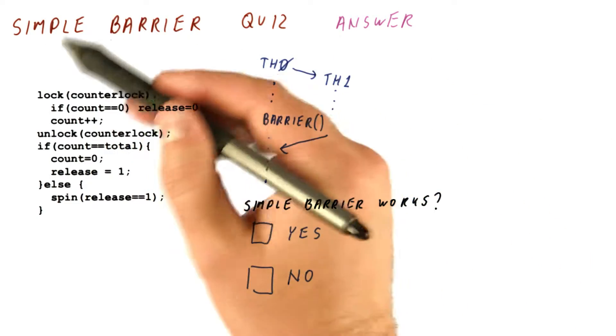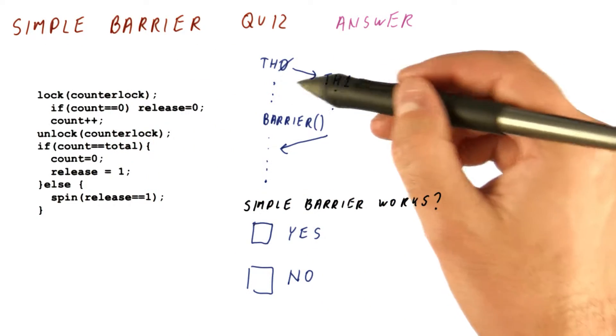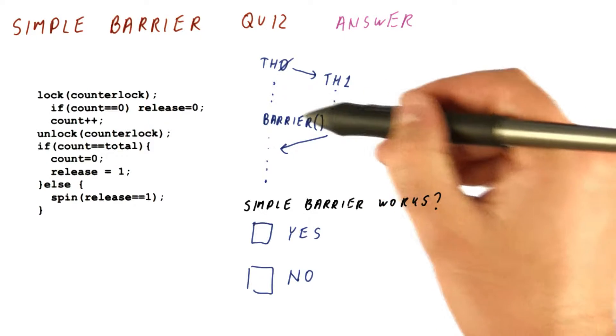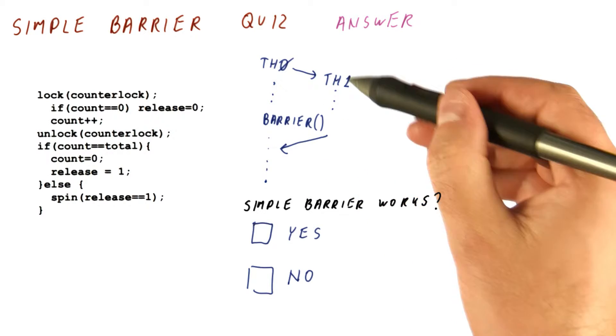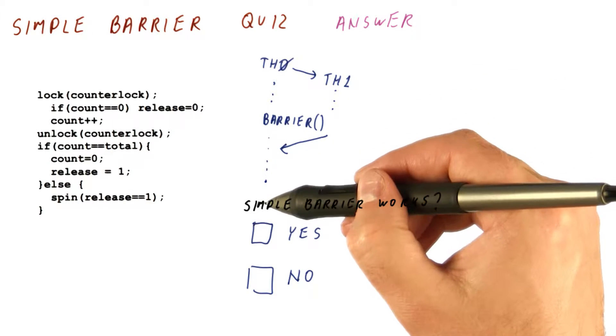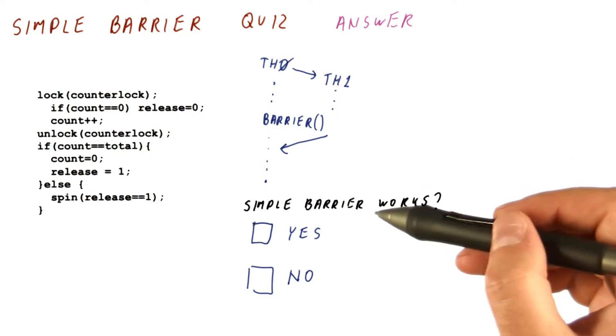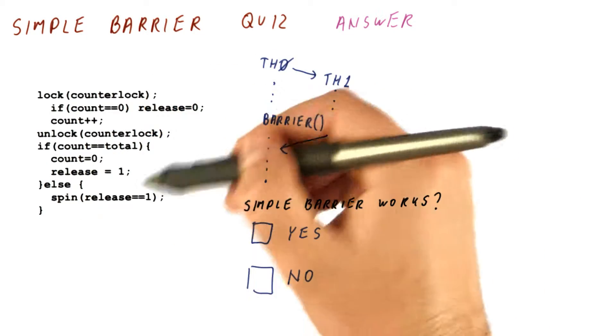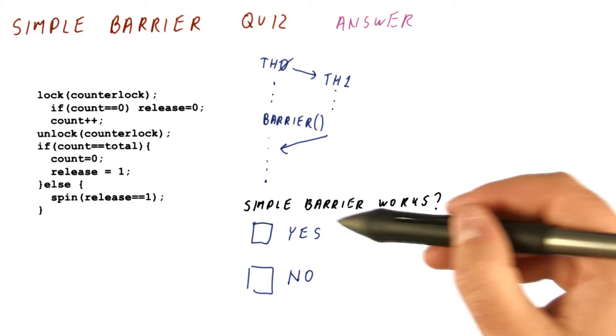Let's look at the answer to our simple barrier quiz where we had this program where both threads are going to synchronize on a single barrier and then thread one finishes and then thread zero continues alone. The question is, does our simple barrier implementation work for that?